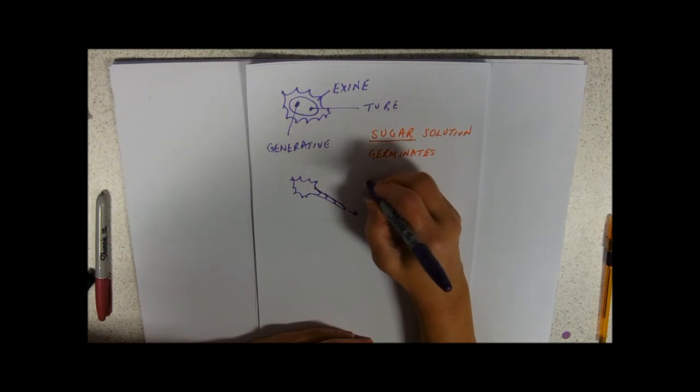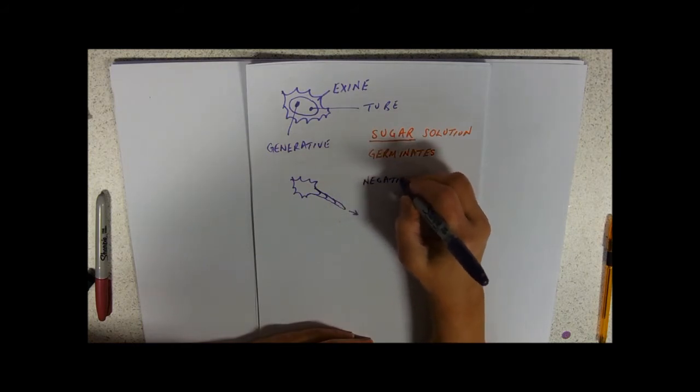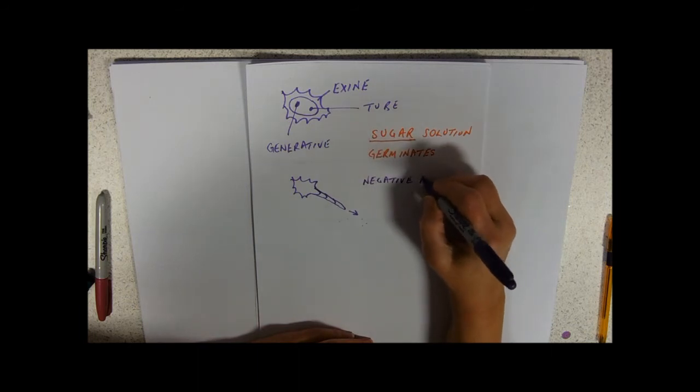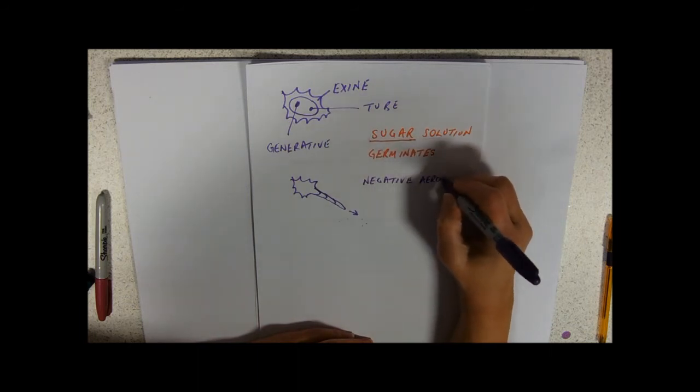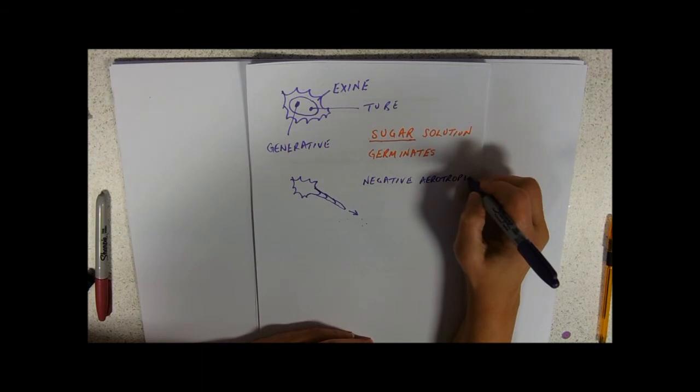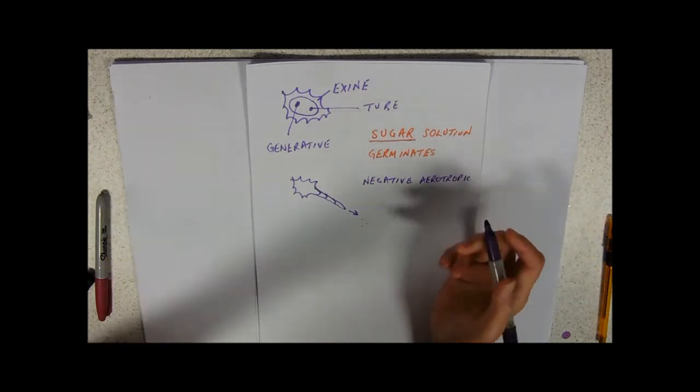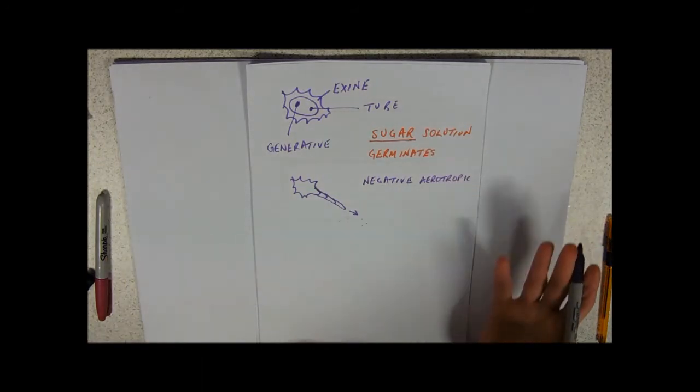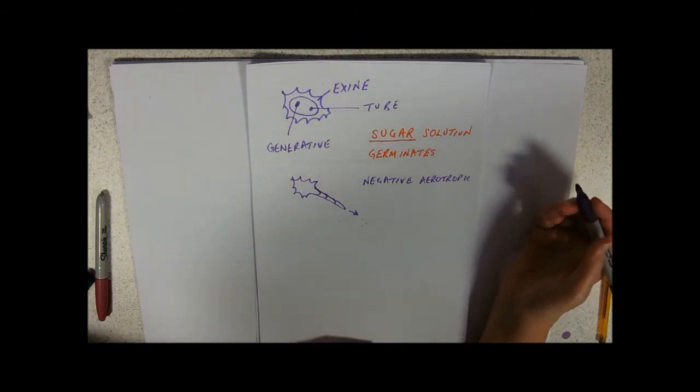This moves away from the air, so we call it negative aerotropic, growing away from the air. And it may also be positively chemotropic and be attracted to something in the ovule.